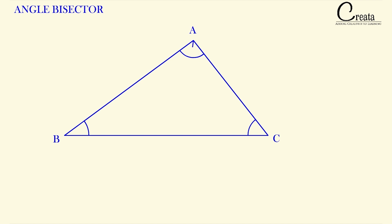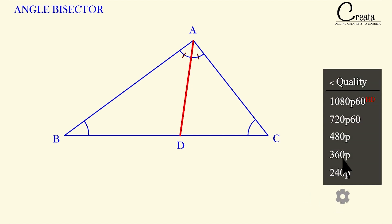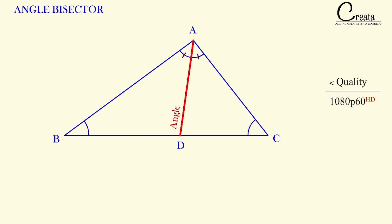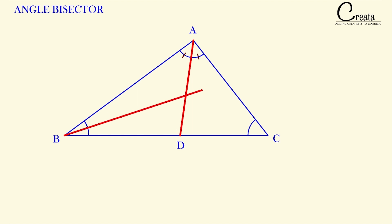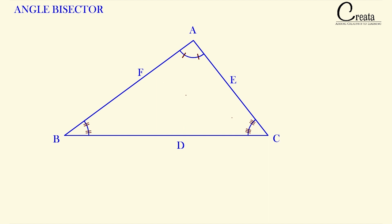Let's take a triangle ABC. The line that bisects the angle into two equal portions is known as the angle bisector. Here the line AD divides angle A into two equal parts, so line AD is the angle bisector of angle A. Similarly, line BE is the angle bisector of angle B, and line CF is the angle bisector of angle C. A triangle has three vertices, so a triangle can have three angle bisectors.